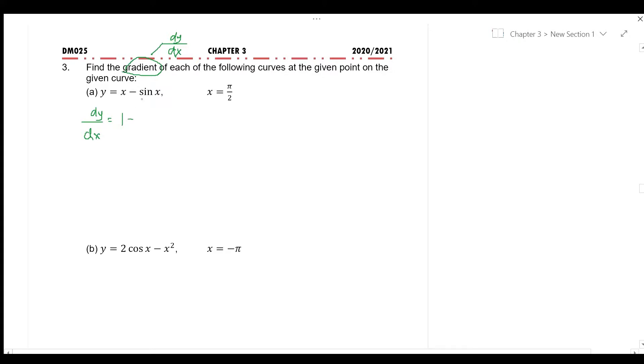minus differentiate sin is cos x. And then substitute the value of x equals to π/2 into dy/dx. At x equals to π/2, dy/dx equals to 1 minus cos(π/2). So by using calculator and make sure your calculator have been changed into mode radian, we will get 1 plus 0 which is 1.